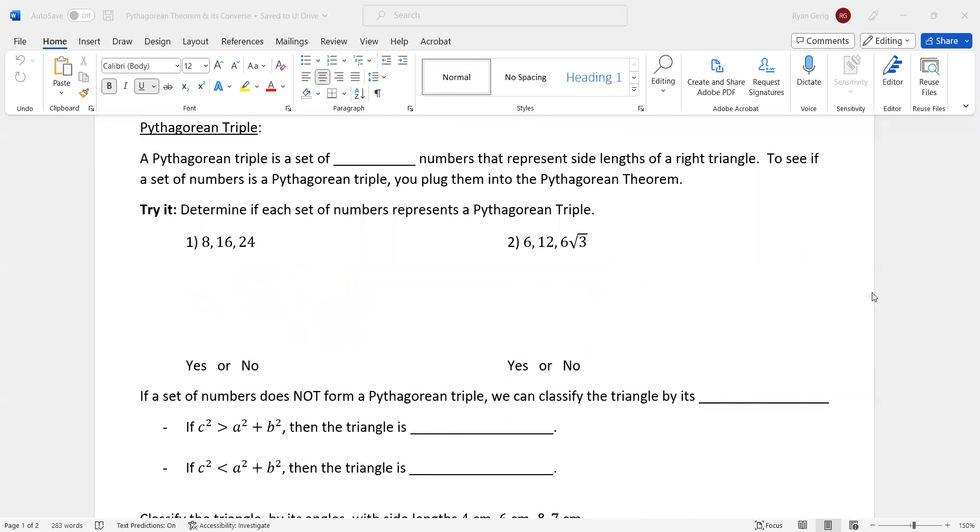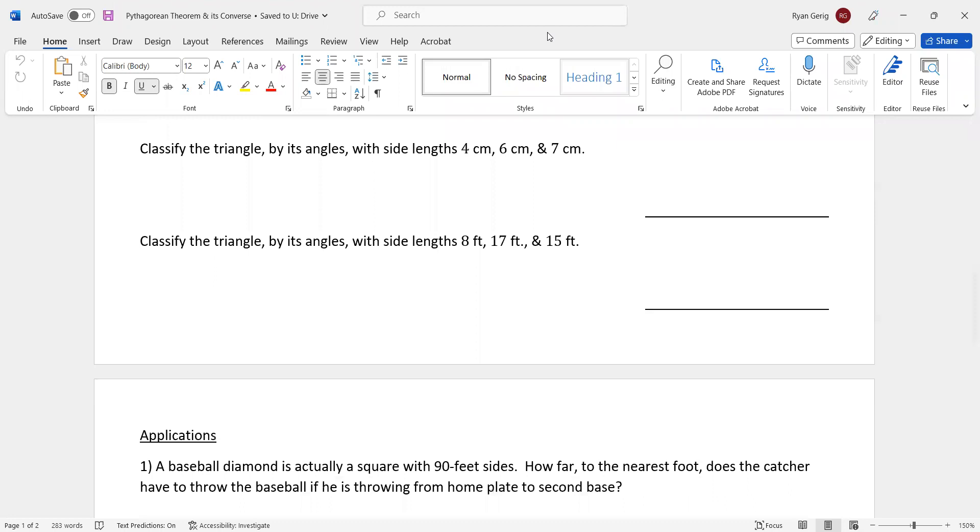All right, moving down. Another practice with that same idea. Classify the triangle by its angles. 4, 6, and 7. Again, you want to look at the biggest side and make it by itself. The other two, square them and add them. So 16 plus 36, and this is 49. 16 plus 36 is 52. This is 49. So C squared is smaller here. I almost want to write it down. C squared is smaller, which means this is an acute triangle.